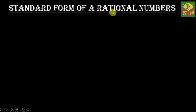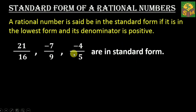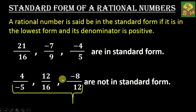Standard form of a rational number: A rational number is said to be in the standard form if it is in the lowest form and its denominator is positive. For example, the rational numbers 21 over 16, negative 7 over 9, and negative 4 over 5 are in standard form. But the rational numbers 4 over negative 5, 12 over 16, and negative 8 over 12 are not in standard form.